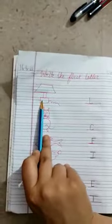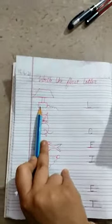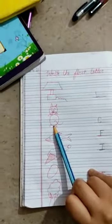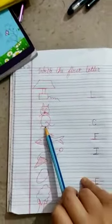Here you have some pictures. You have to write the first letter. What is this? This is a lamp. Lamp starts with the letter L. Write down L here. What is this? This is a cat. Cat starts with the letter C.